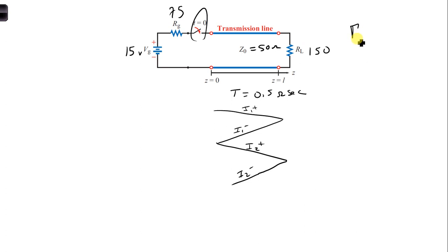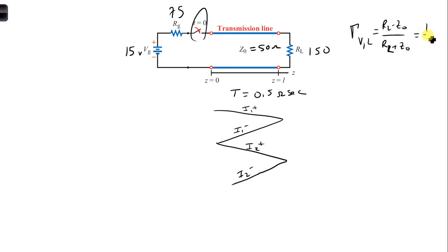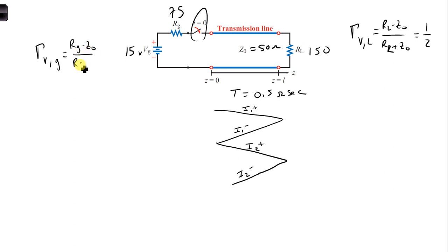I'm going to start with the voltage reflection coefficient, and then we can quickly get the current reflection coefficient. The voltage reflection coefficient at the load is RL minus Z naught over RL plus Z naught. Plugging in our numbers, we get one half. The reflection coefficient for the voltage at the generator is RG minus Z naught over RG plus Z naught, which is one fifth.